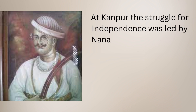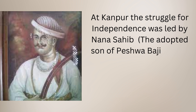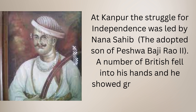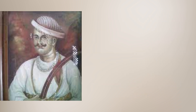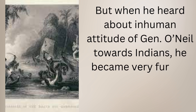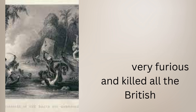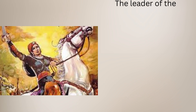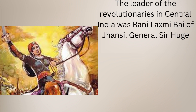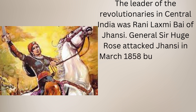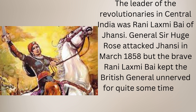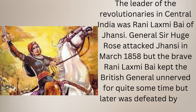At Kanpur, the struggle for independence was led by Nana Sahib, the adopted son of Peshwa Baji Rao II. A number of British fell into his hands and he showed great kindness to them, but when he heard about the inhuman attitude of General O'Neill towards Indians, he became furious and killed all the British. The leader of the revolutionaries in central India was Rani Lakshmi Bai of Jhansi. General Sir Hugh Rose attacked Jhansi in March 1858, but the brave Rani Lakshmi Bai kept the British general unnerved for quite some time before she was eventually defeated.